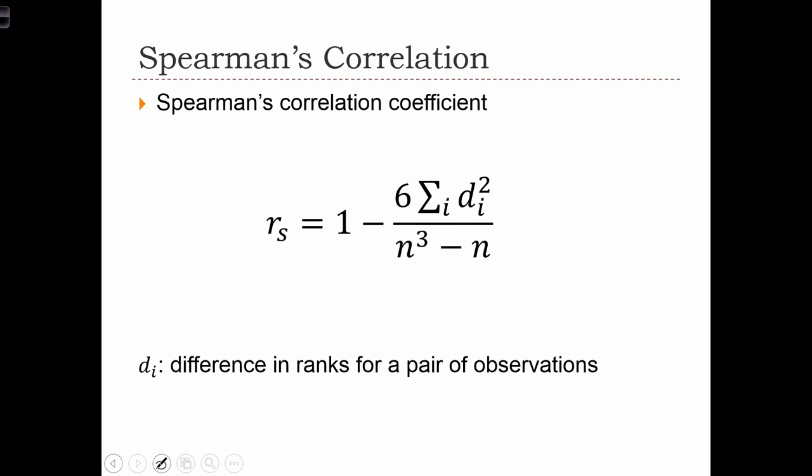The statistic for Spearman's R really depends on this term, the sum of di squared. Here, di is the difference in ranks for a pair of observations. So for an x, y pair, we're going to calculate the rank of that observation in each of these variables, x and y.